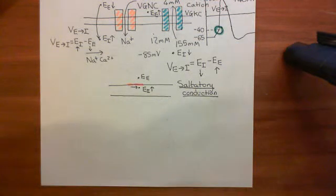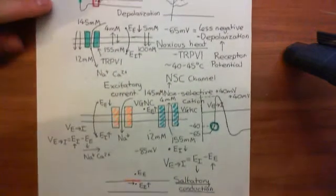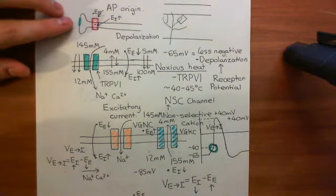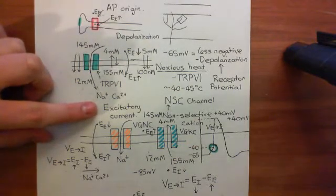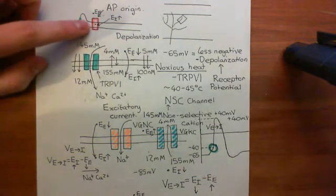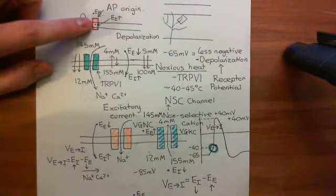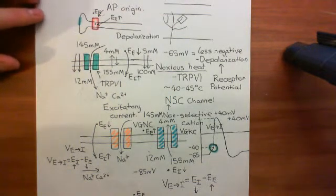Welcome back to this next video in which we are discussing the transduction of painful stimuli. We've now discussed how we can activate nociceptors to fire action potentials. The role of the nociceptors — receptors for noxious stimuli within the axon terminal — is to produce some sort of excitatory depolarizing current, which can then be transmitted into the action potential origin portion of the axon, which will then hopefully be depolarized enough to fire an action potential that propagates all the way up to the spinal cord.